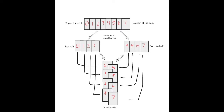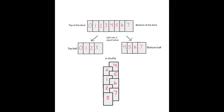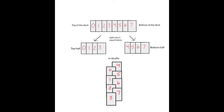If we begin our shuffling with the top half — in other words, if we shuffle in such a way that the top card remains on top and the bottom card remains on bottom — we call this an out shuffle. Alternatively, if you begin with the bottom pile, the original top card marked as index zero ends up in the second position instead of remaining on top. We call this process an in shuffle.